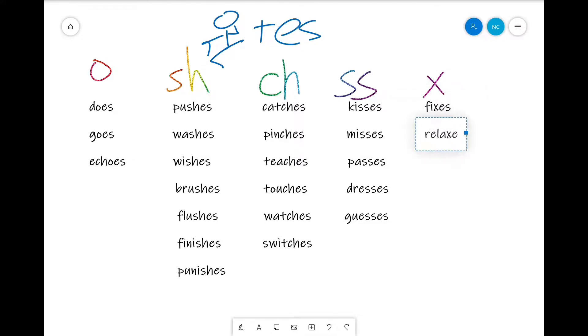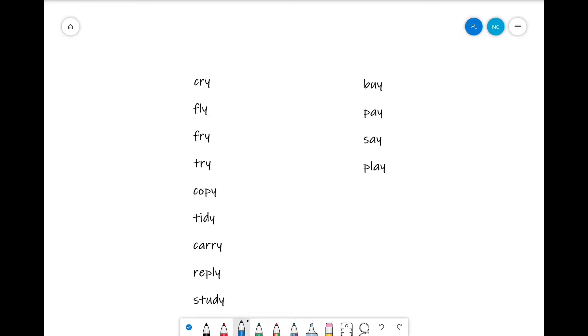Now here comes our last cases today, when we end with y, there are cases that we will throw this y to the rubbish bin, remember this rubbish bin, and then add ies. So for this, cry, throw away the y to rubbish bin, and add ies, cries.